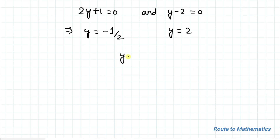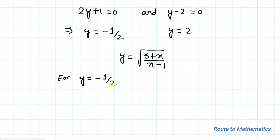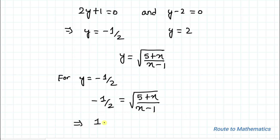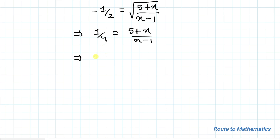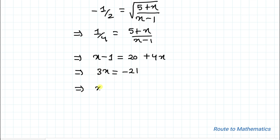We have taken y equals to root under (5 plus x) divided by (x minus 1). Finding the value of x for y equals to minus 1 by 2: minus 1 by 2 equals to root under (5 plus x) divided by (x minus 1). Squaring both sides, 1 by 4 equals to (5 plus x) divided by (x minus 1). By cross multiplication, x minus 1 equals to 20 plus 4x, which gives x equals to minus 7.